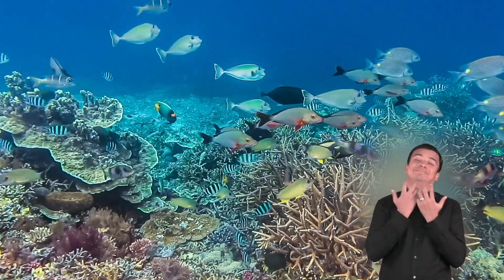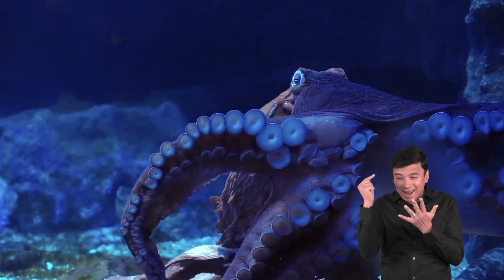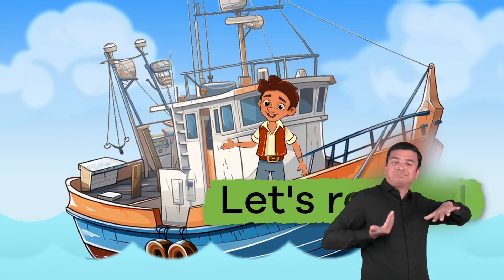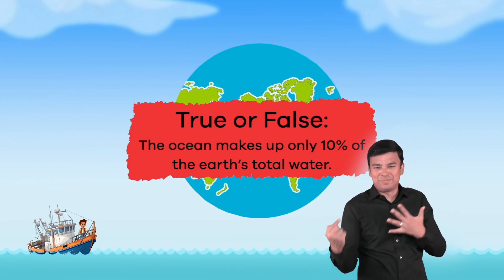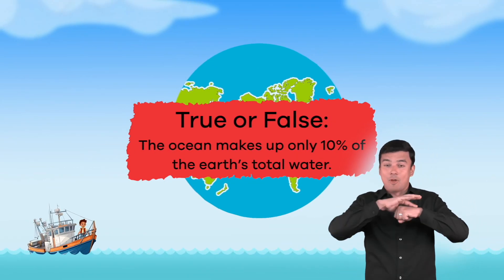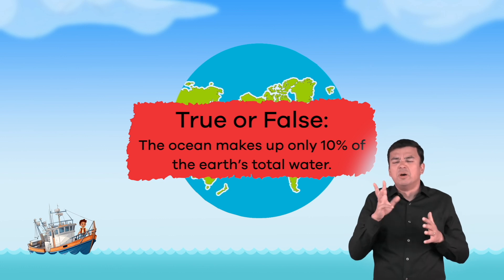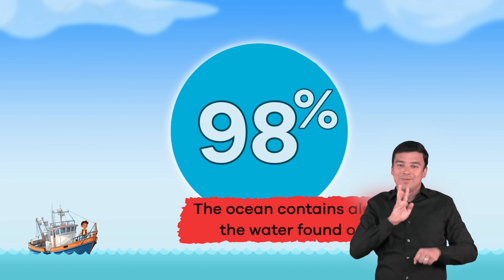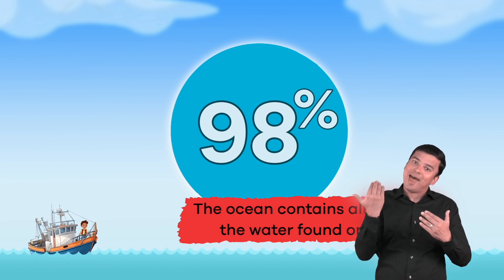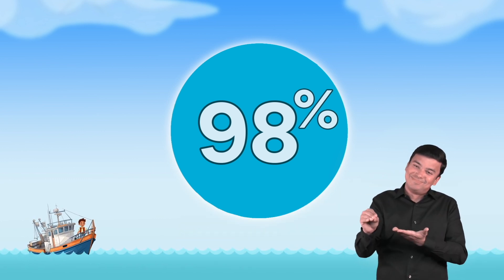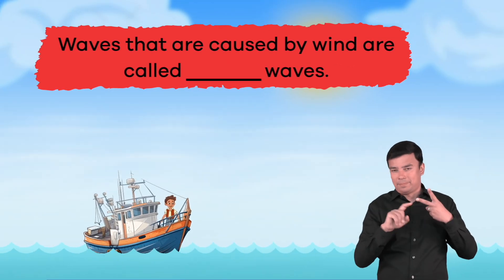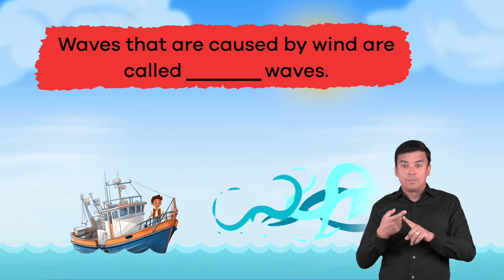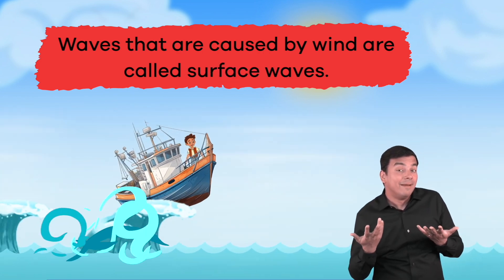Now that we have learned some cool, interesting facts about the ocean, let's dock our boats and review. True or false: the ocean makes up only 10% of the Earth's total water. False! The ocean contains almost all of the water found on Earth, around 98%. Fill in the blank: waves that are caused by wind are called blank waves. Surface!